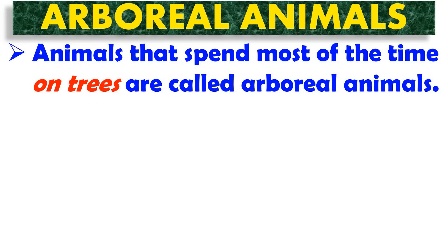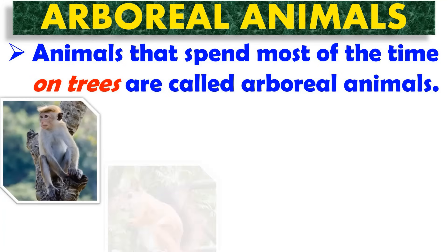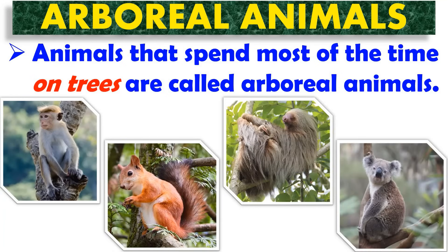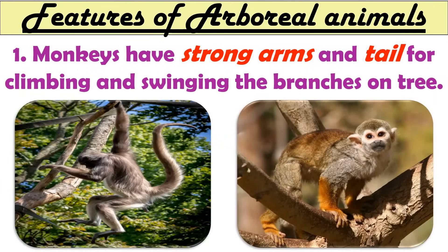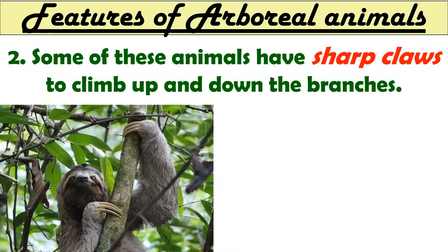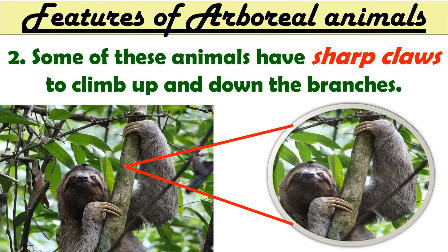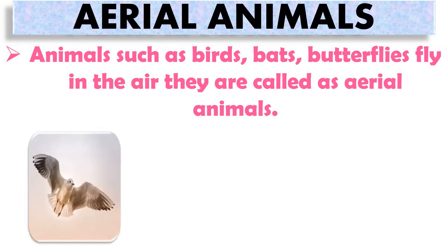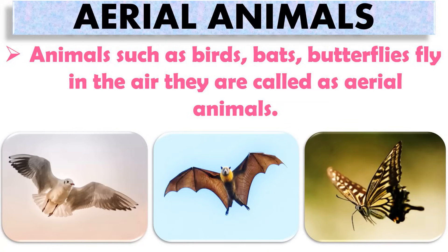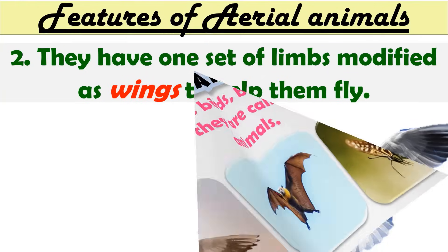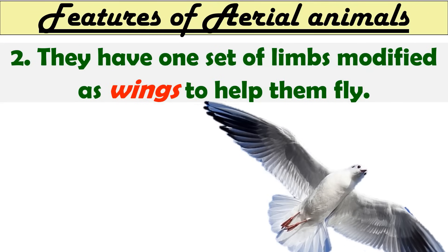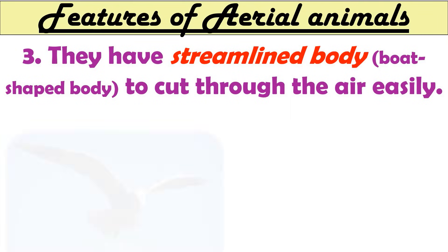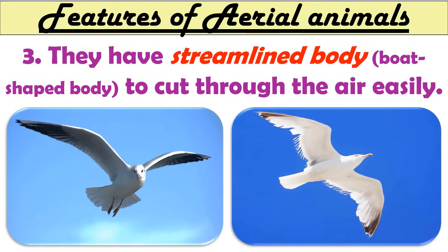Animals that spend most of their time on trees are called arboreal animals. Monkeys, squirrels, sloths, and colobuses are some examples. Monkeys have strong arms and tails for climbing and swinging on branches, and some of these animals have sharp claws to climb up and down. Animals such as bats, butterflies, and birds fly in the air — they are known as aerial animals. Their adapted features include one set of limbs modified as wings to help them fly, and a streamlined, board-shaped body to cut through the air easily.